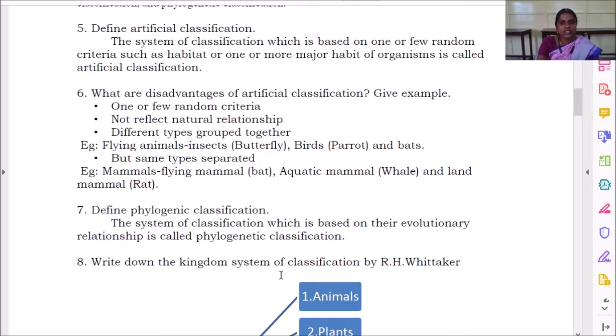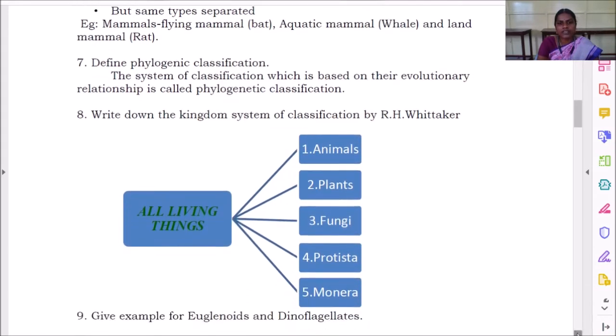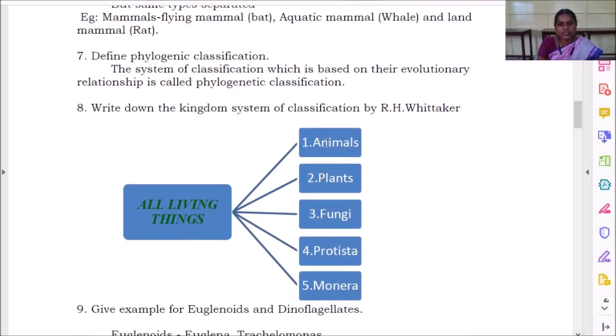Next is write down the kingdom system of classification by R.H. Whittaker. So how did R.H. Whittaker classify the living things? He classified into five groups.